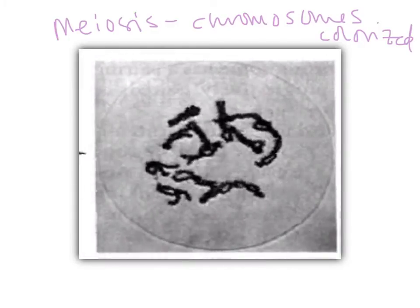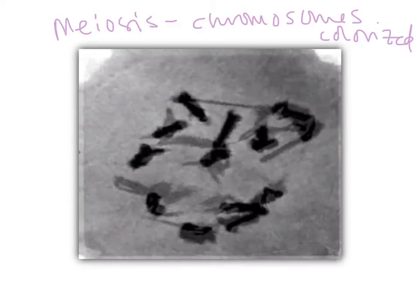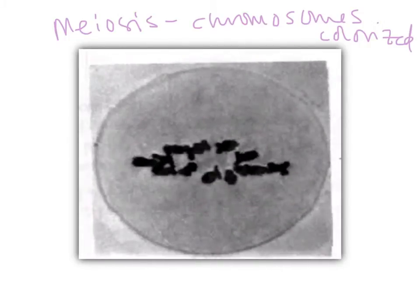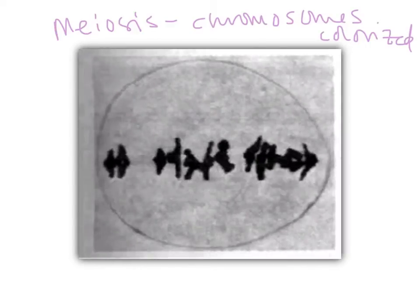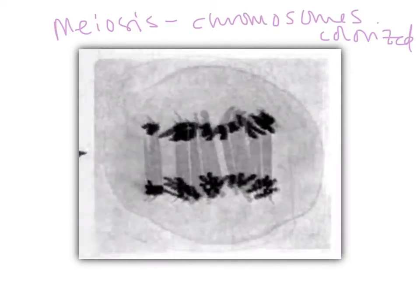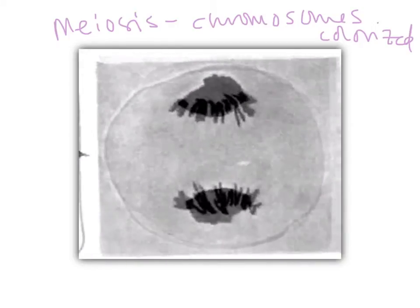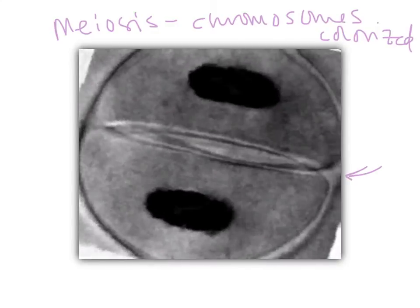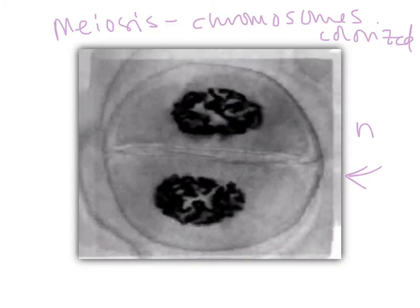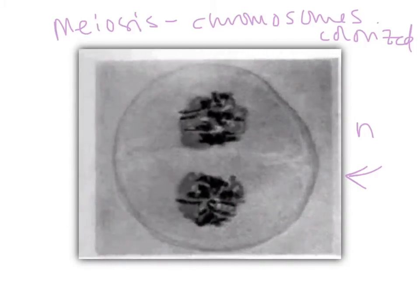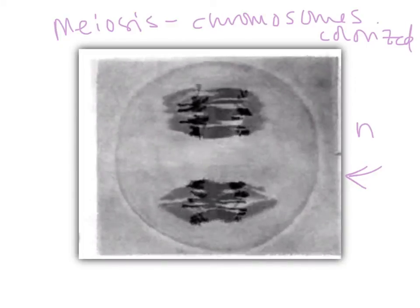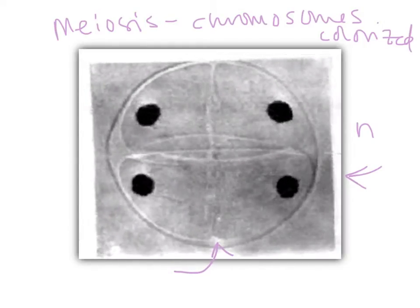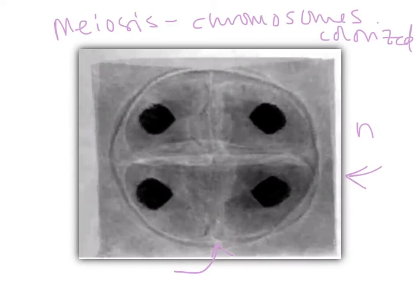The homologues are pairing up, trying to find each other. They need to attach the spindle and line up in the middle of the cell. We're lined up, we're paired — and now we're in anaphase 1, going towards the poles. Telophase 1. There's the membrane right there. Now we are at N. They're all just individual chromosomes with their sisters lining up. Anaphase 2 — going to the poles, it's telophase. And there's cleavage right there. We have four cells, each at N.